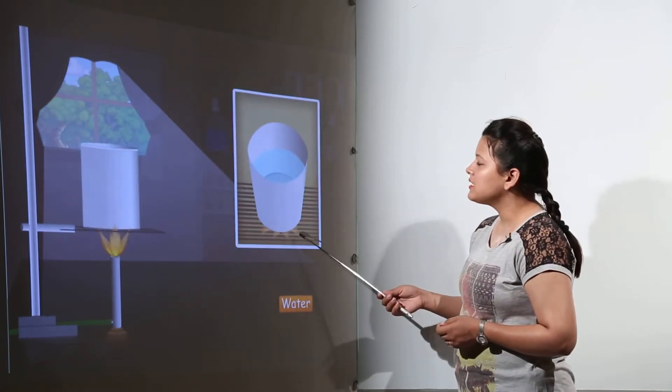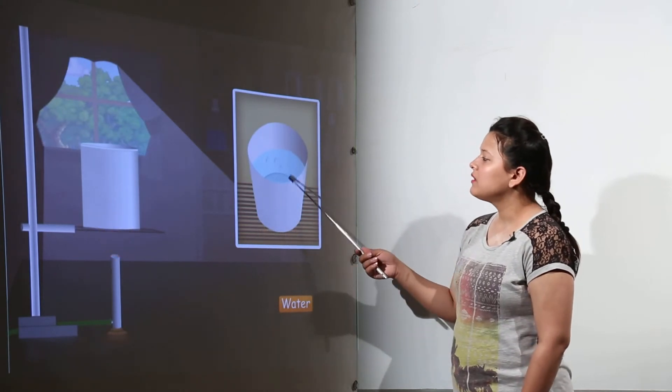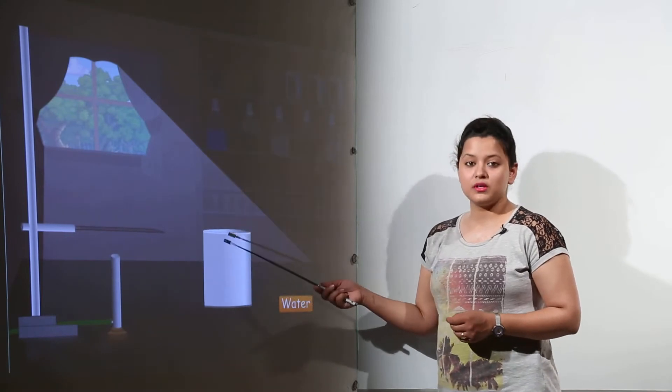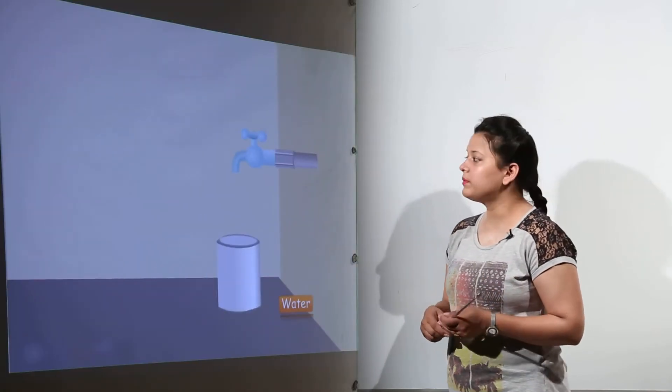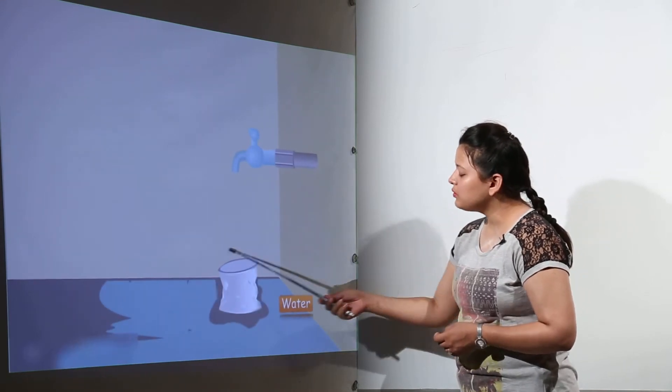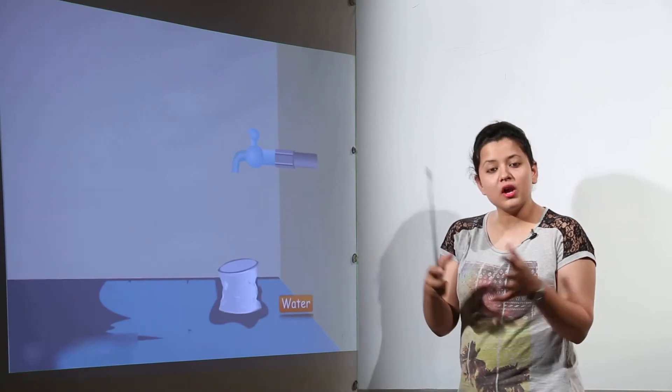Now we shall see another experiment where we have taken a container and are boiling water. When the water boiled, it started converting into water vapor. We covered it with a lid and switched on the tap. Immediately, you would notice that the can changed its shape—it got shrunk.